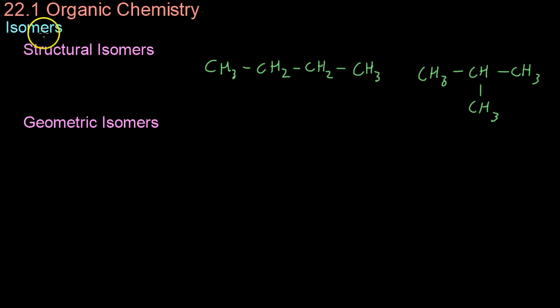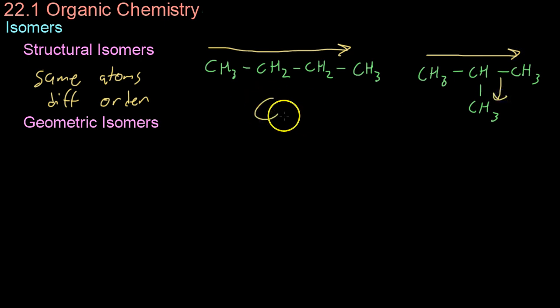Looking more in depth at isomers and their differences, there are two main types: structural isomers and geometric isomers. The isomers we looked at before are structural isomers. In other words, they have the same atoms bonded together but in a different order. In this case, instead of having carbons one, two, three, four in a chain, you have three going this way and one going this way. Despite that, both will have the formula C4H10 if you were to just write it with our old chemical formula.